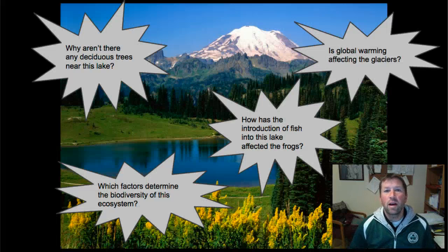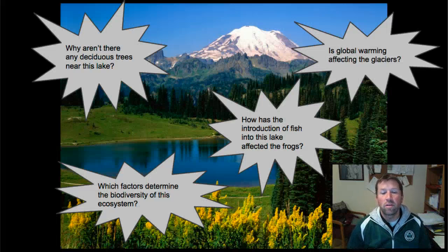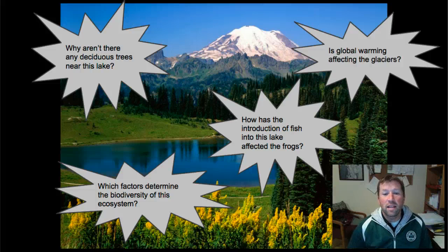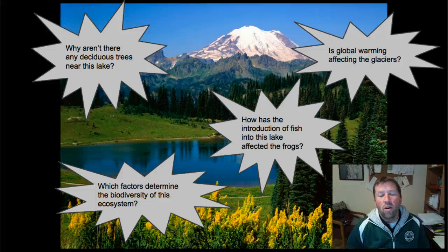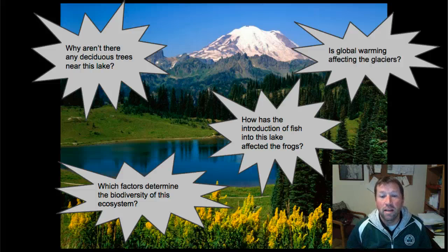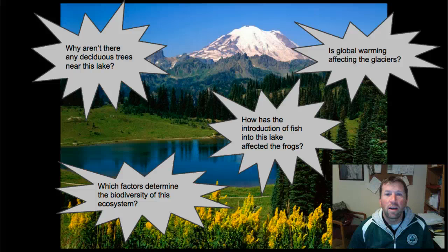Scientists go out and they ask questions about the natural world. Here are some examples. Scientists could look at this scene and think about factors that would determine biodiversity or how the introduction of fish into this pond might affect other organisms such as frogs.